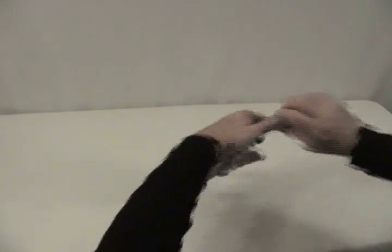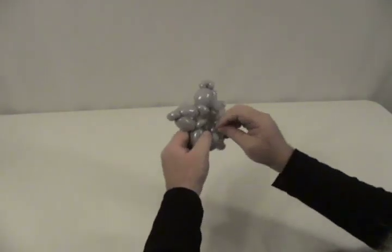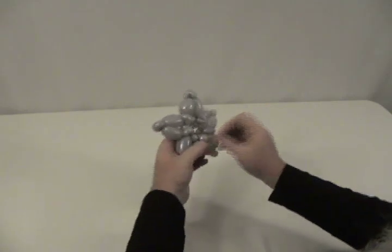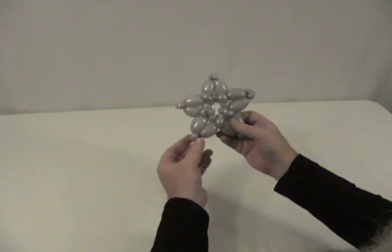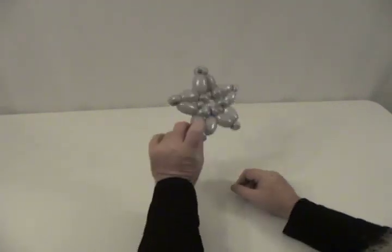Before I connect that, I'm going to pop this excess off, tie that, and then bring that down in the nozzle pinch twist there. Straighten all those up a little bit. Now there's your basic star.